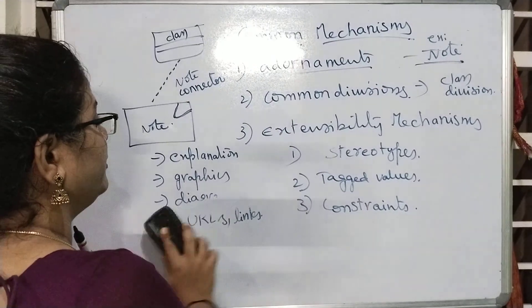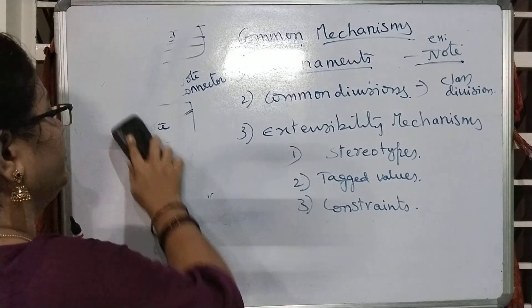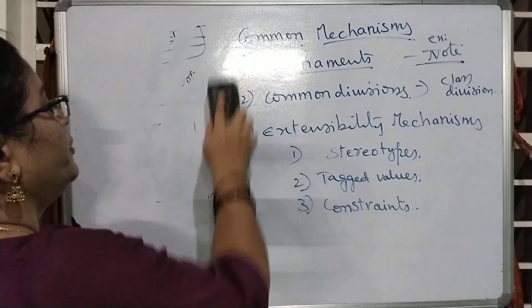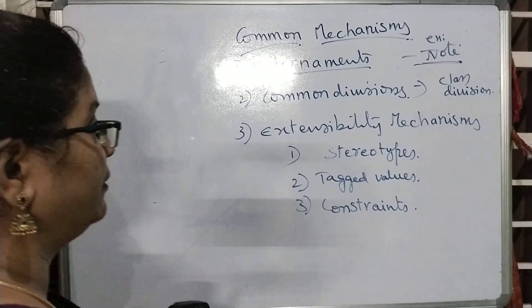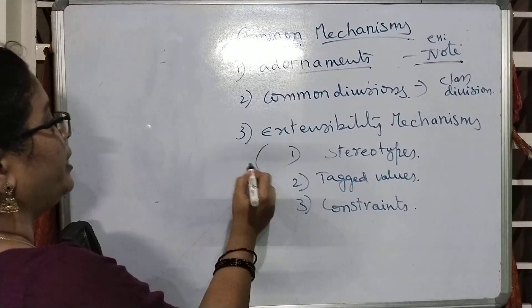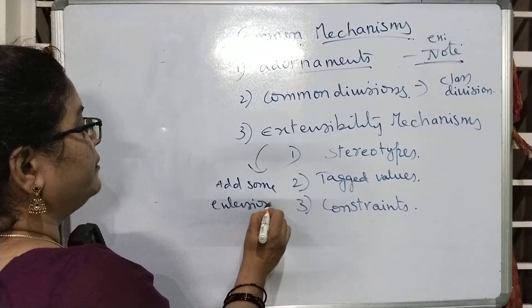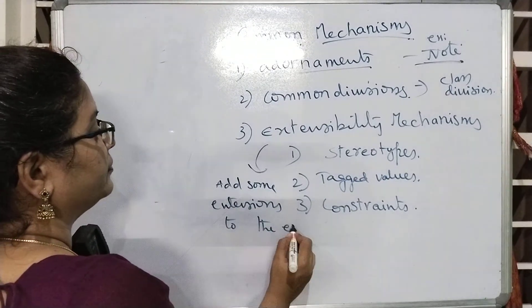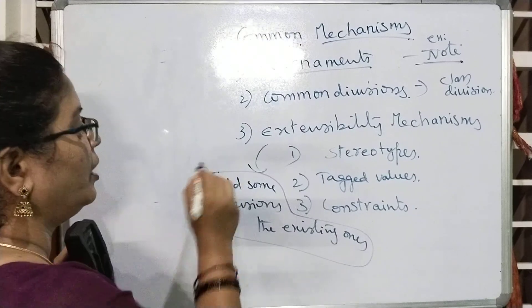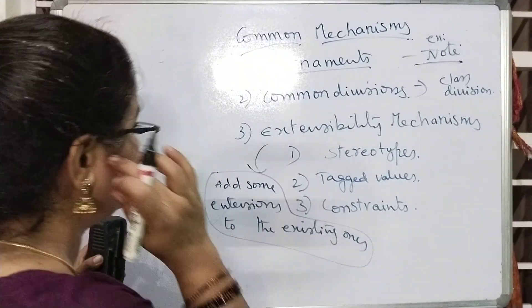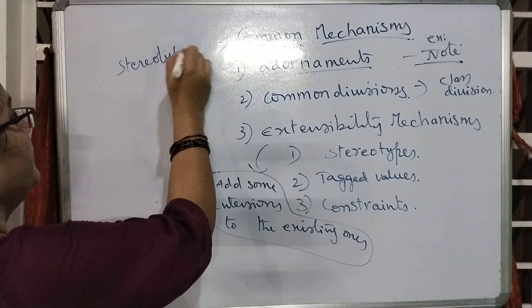Now we are going to see the other kind of extensibility mechanisms. The first one is stereotypes. Extensibility mechanisms normally add some extensions to the existing ones. The very first one is nothing but the stereotype. A stereotype is a meaningful word that is represented in guillemets (« »).